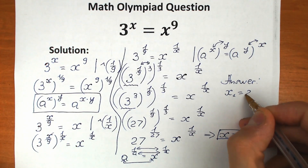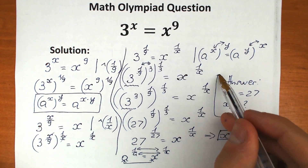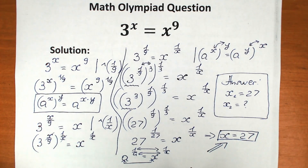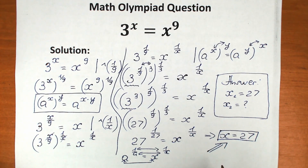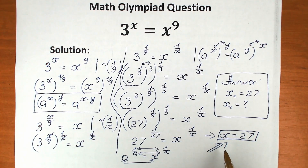So our answer is x₁ equals 27, and there is a second x according to the second method. This is our root, and it's a great solution — we used a great power rule and a great trick. So x equals 27 is our solution. If you're interested in the second method, I'll post that video soon. Thank you for your time, have a great day, and if this video was helpful, don't forget to like and subscribe. See you in the next videos!